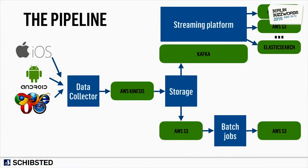All of these sites implement the Shipstead custom tracker. We have a tracker for iOS, Android, and the web. These trackers generate click-stream data, sending a signal every time you click a link or view an item on these sites, to a data collection service where all events end up in an AWS Kinesis stream. From there, we split the stream into two different pipelines: a traditional batch processing pipeline and a Kafka-based streaming pipeline.